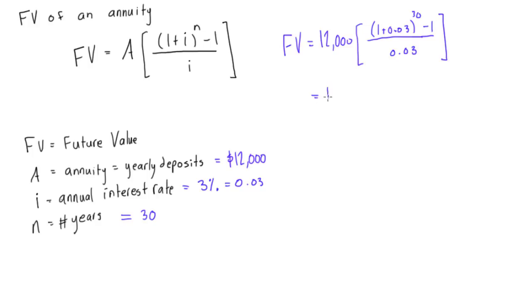So if we just simplify this a little bit, we'll get 12,000 times, this will turn out to be about, this term up here, this will be about 2.42, and there's a few more decimal places, but you can check if you're doing this problem as well, minus 1 over 0.03,